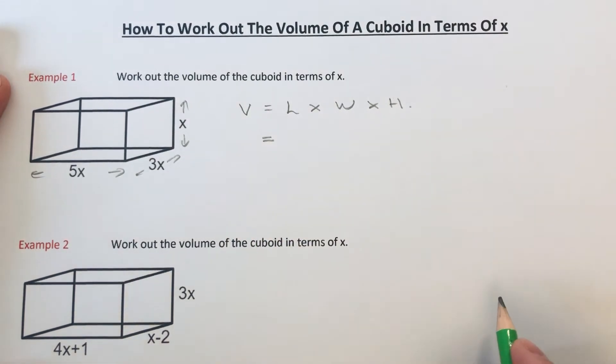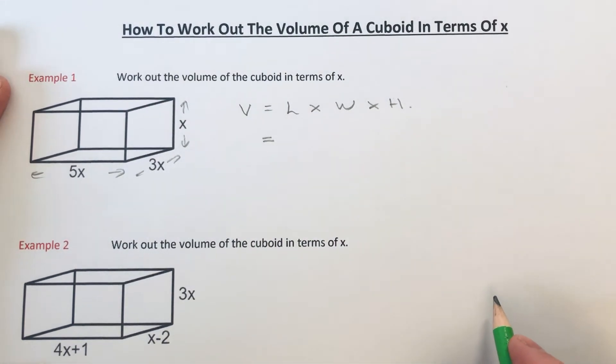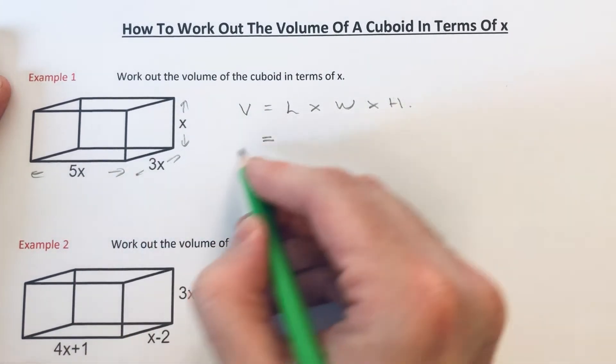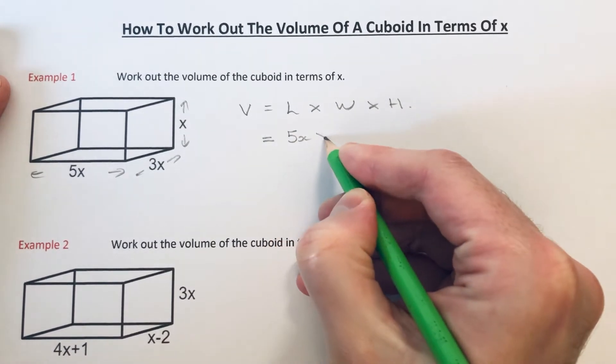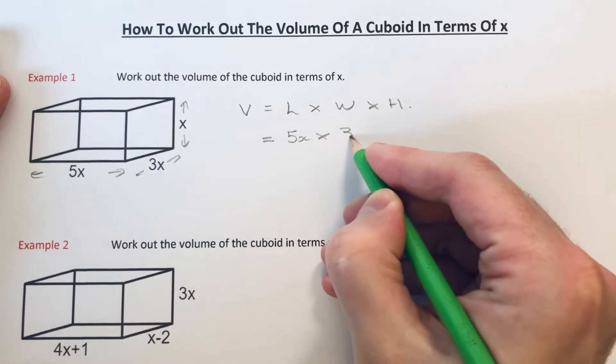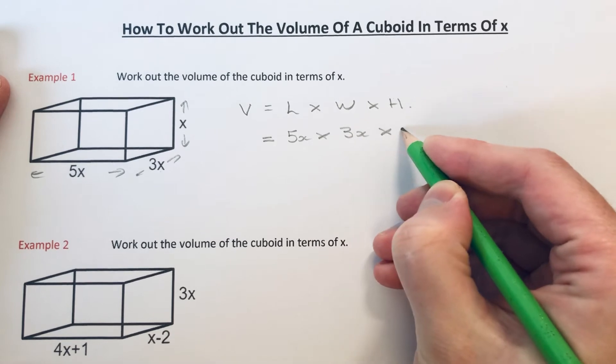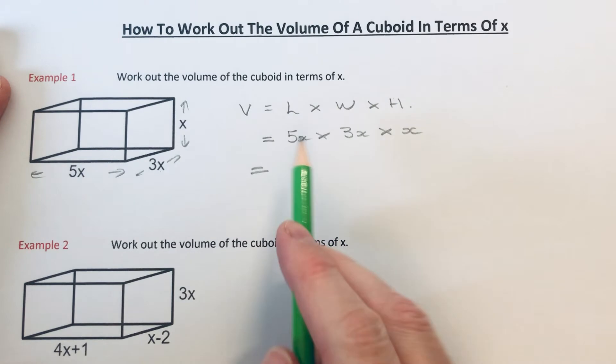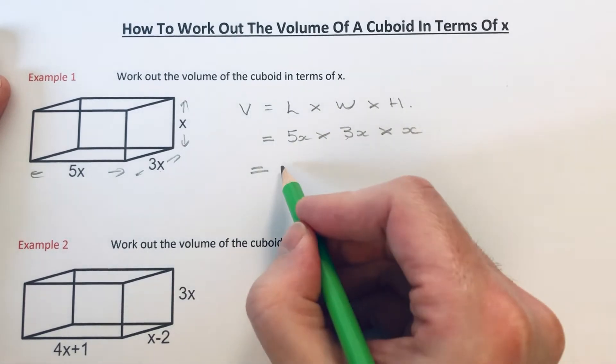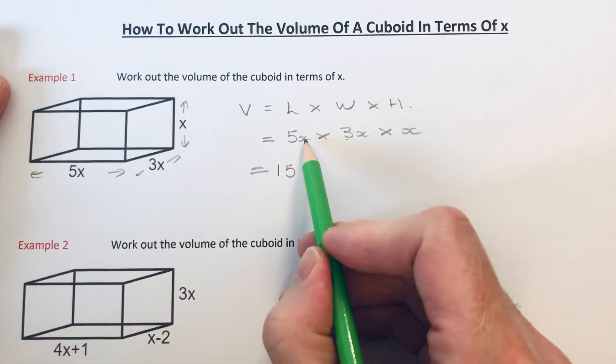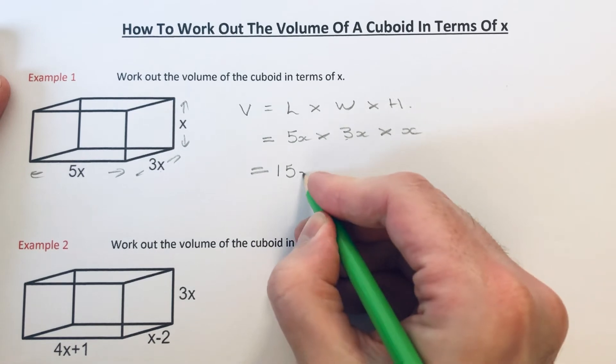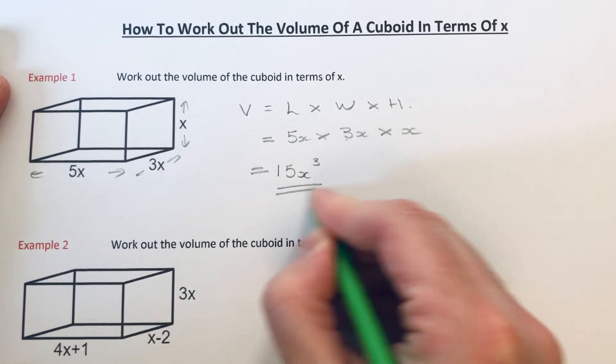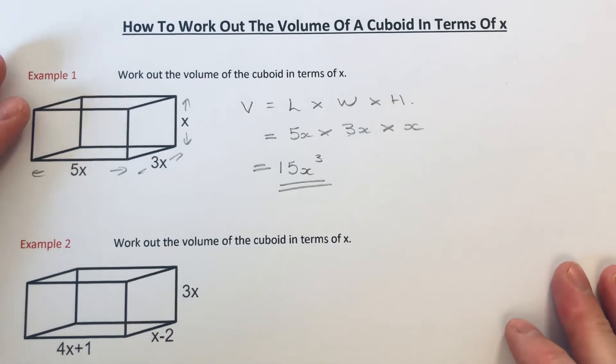It doesn't actually matter which order you put these in. Our length of the box is 5x, and we times that by the width of the box, which is 3x, and times it by the height, which is x. We can now simplify this. 5 times 3 is 15, and x times x times x is x cubed.